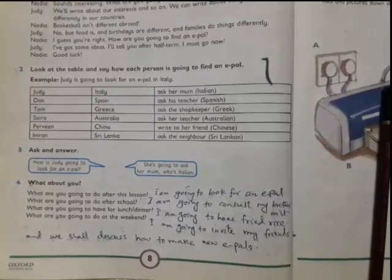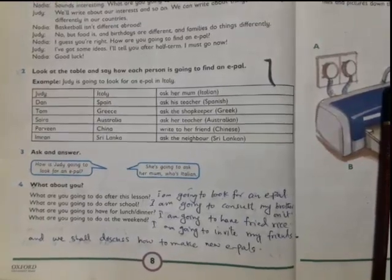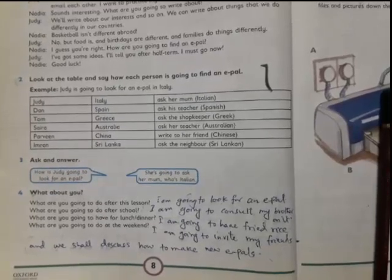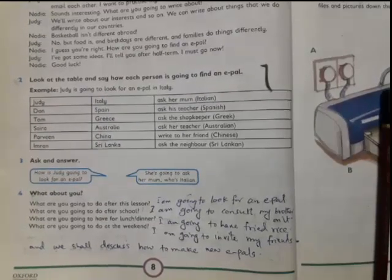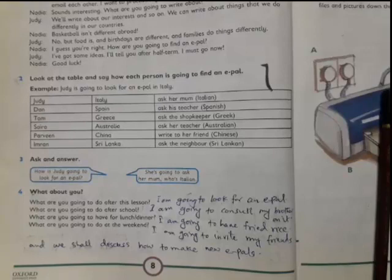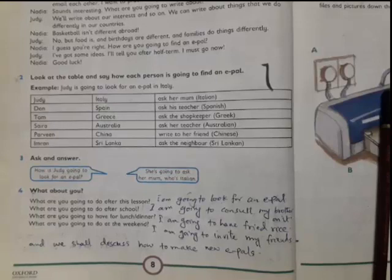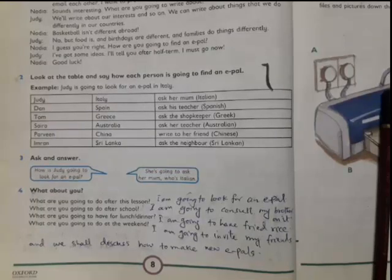And then come to the fourth question: what are you going to do after this lesson? You can write the answers over here because these are general questions. The answer is I am going to look for an e-pal. Second question: what are you going to do after school? The answer is I am going to consult my brother on it.